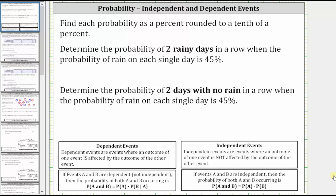We're asked to find each probability as a percent, rounded to a tenth of a percent. First, we're asked to find the probability of two rainy days in a row, when the probability of rain on each single day is 45%.